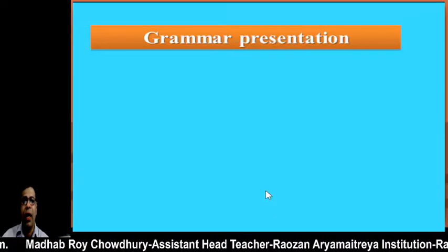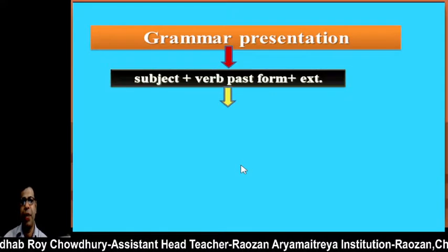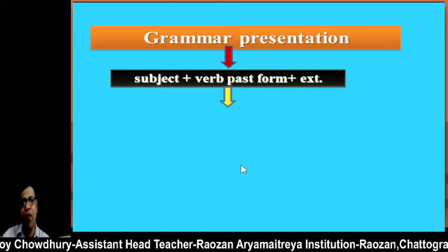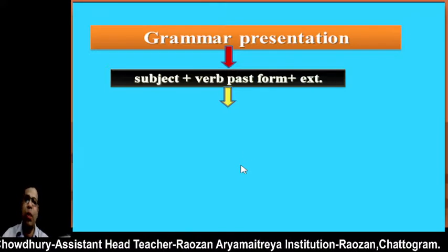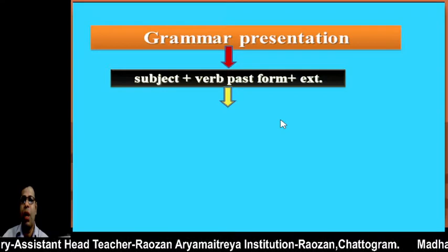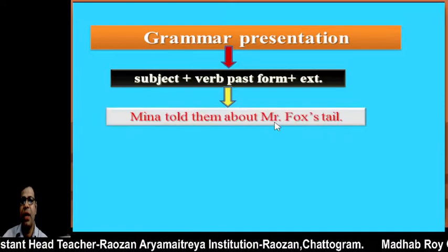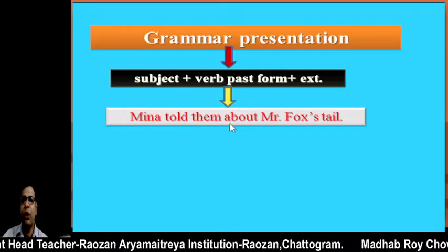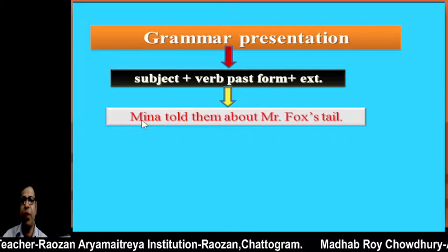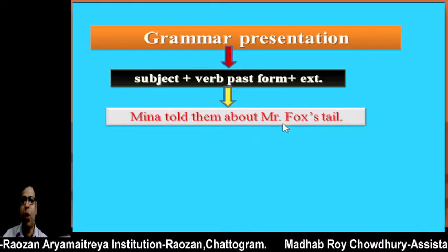Now we are going to practice some grammar. Today I will talk about the past form of the verb. The structure of the simple past tense is: subject + V2 + extension. For example, the sentence 'Mina told them' uses the verb told, which is the past form — the present form is tells. So you use the past form of the verb. Mina told them about this matter.